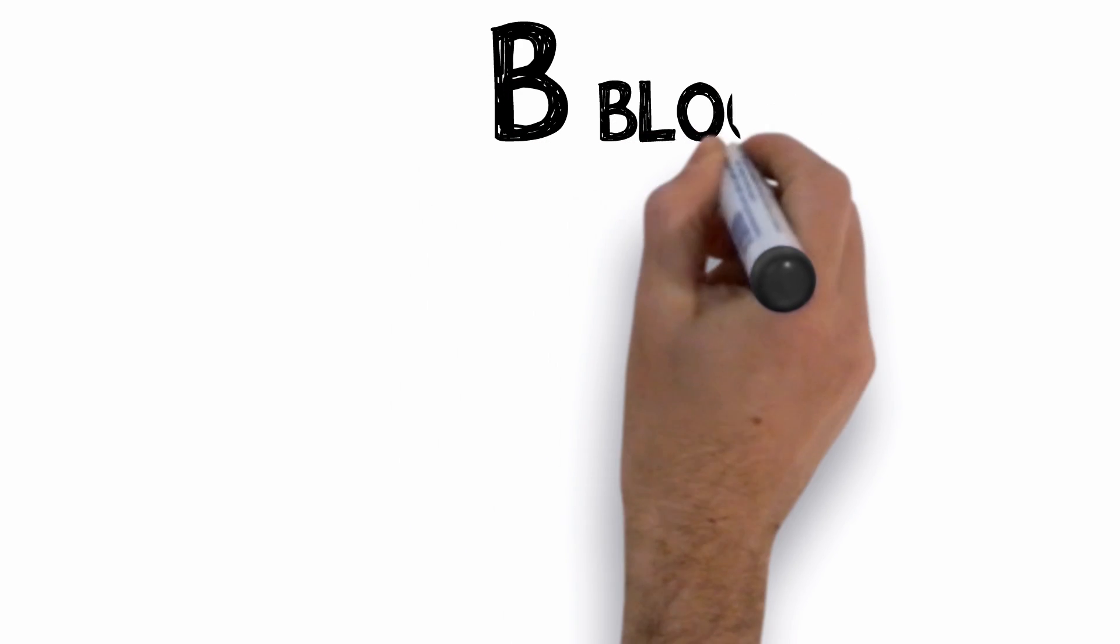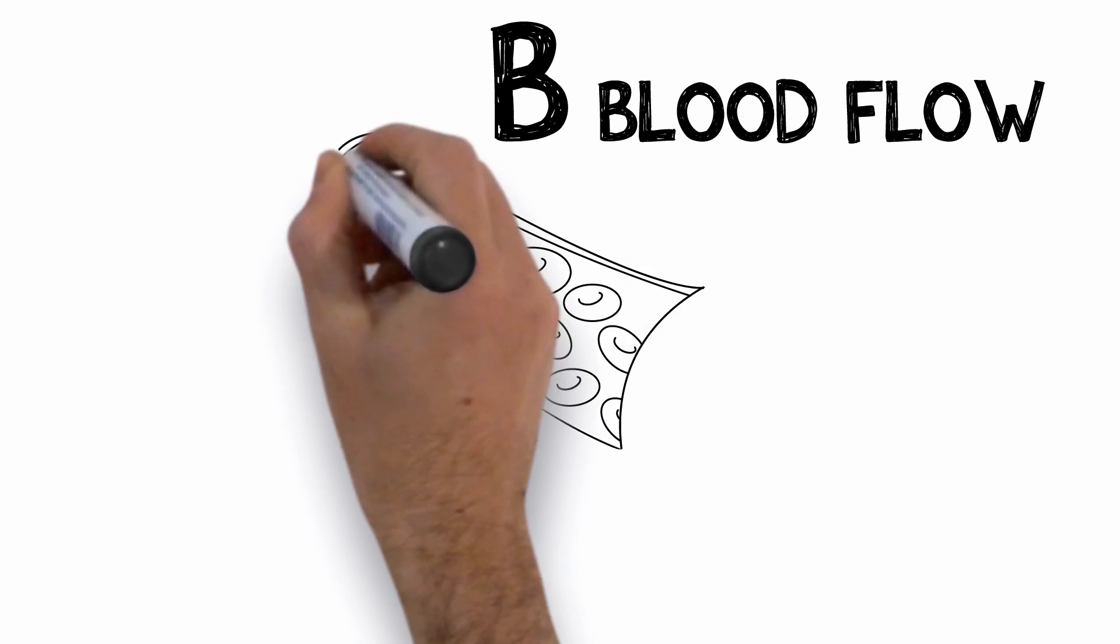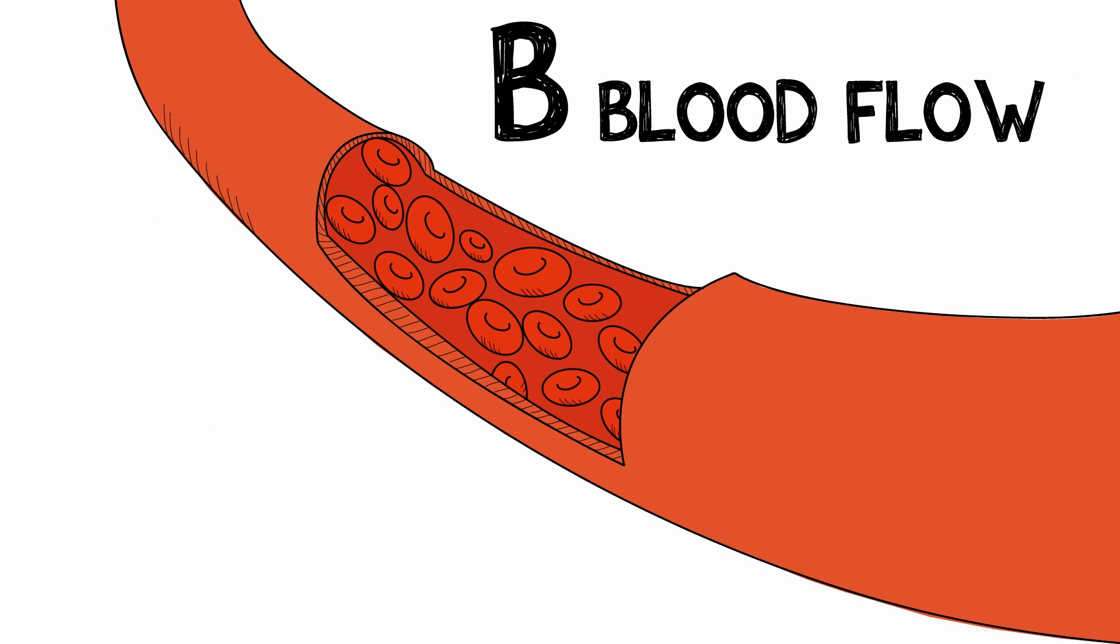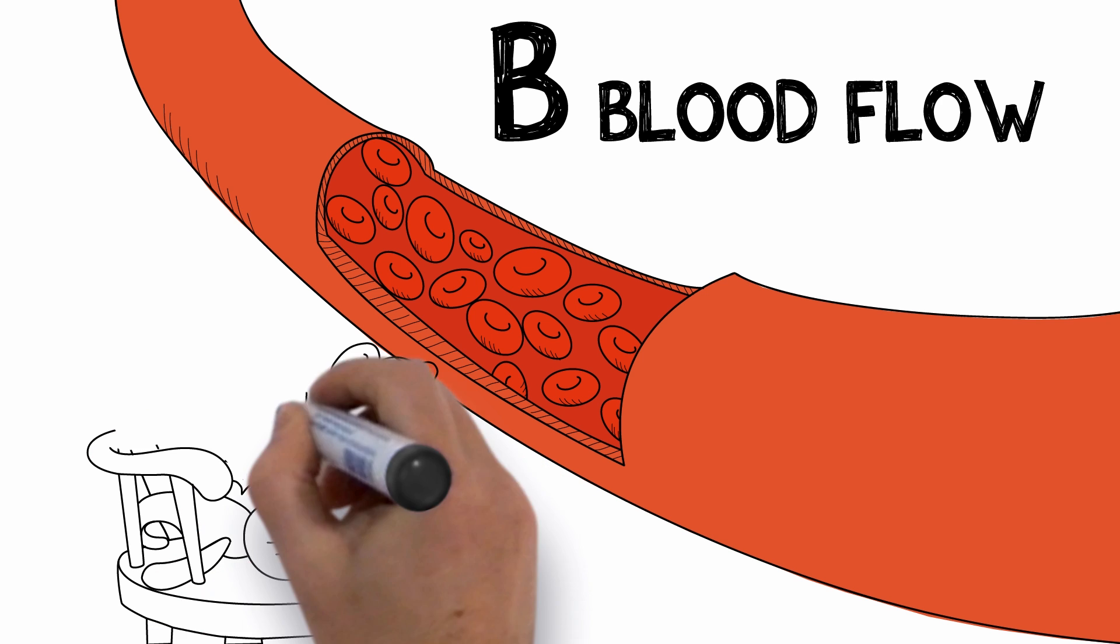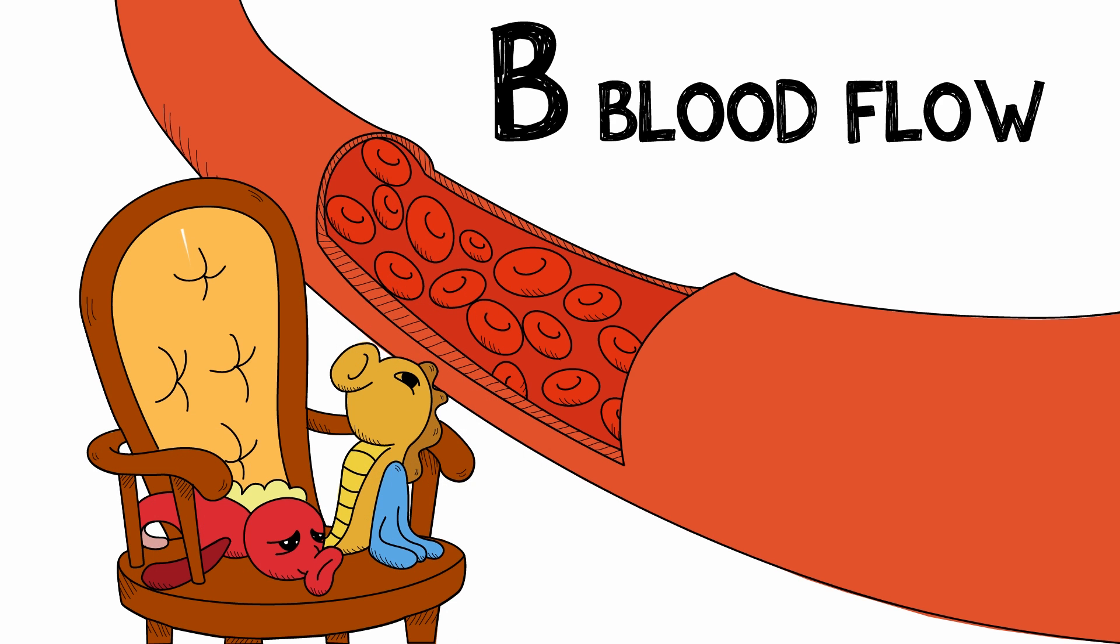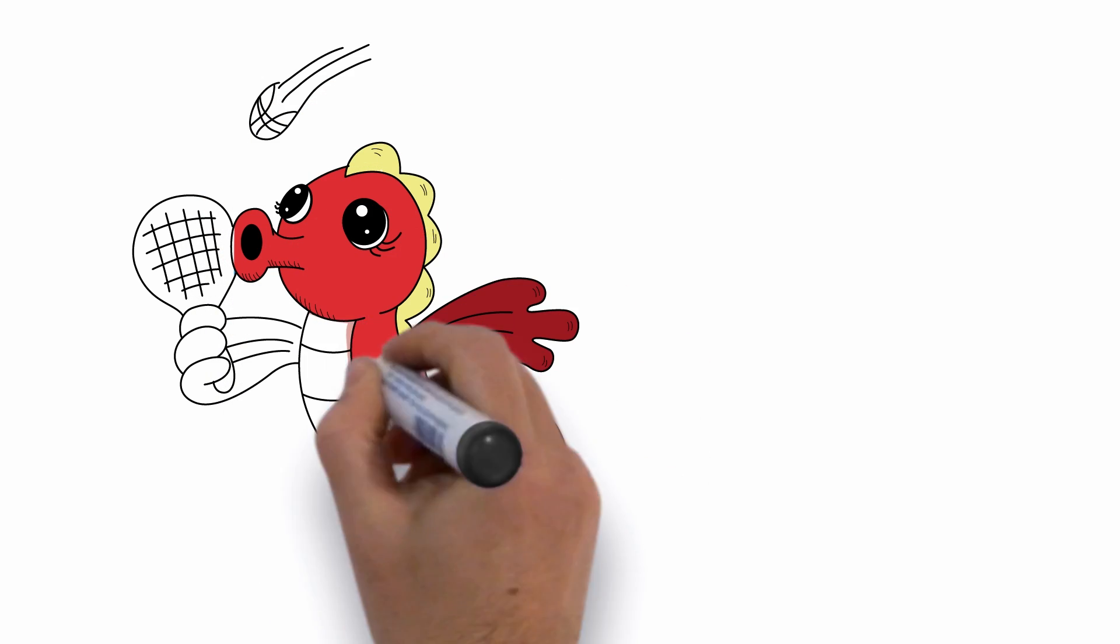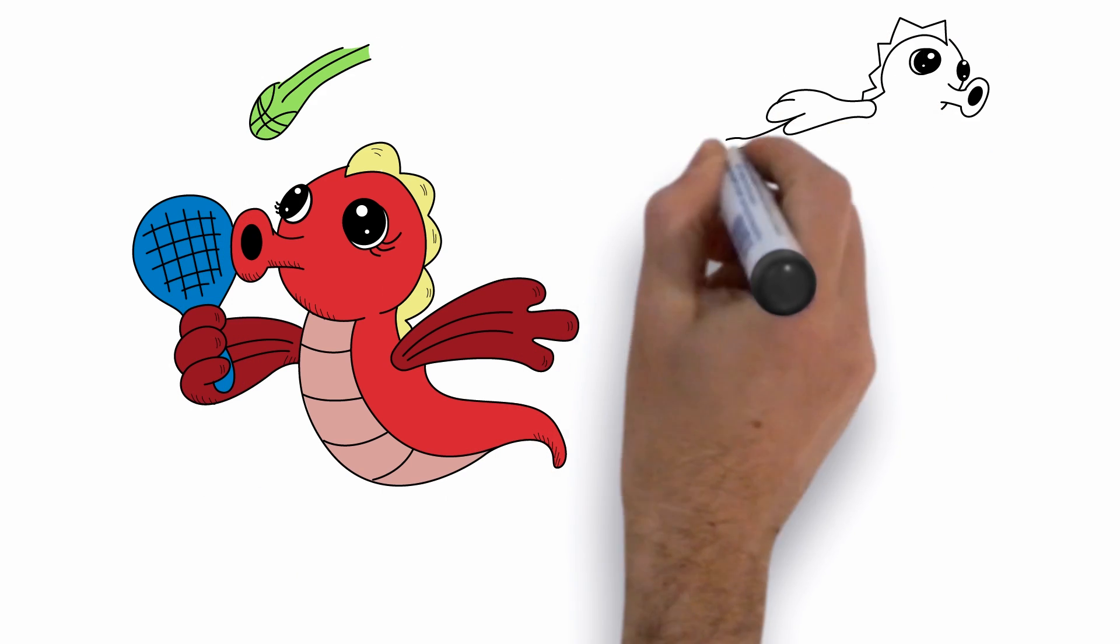B is for blood flow. Blood is essential to life. It brings nourishment to every cell in your body and takes away waste products. Low blood flow is the number one brain imaging predictor of Alzheimer's disease. One of the best ways to keep your blood vessels healthy is to exercise. If Scarlet and Sam just sat around all day and did nothing, they would quite literally become smaller and weaker.